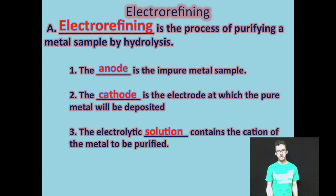This is similar to the electroplating process, but your anode is going to consist of your impure metal. Cathode is going to be the electrode at which the pure metal will be deposited. And you have an electrolytic solution that contains the cation of the metal to be purified.